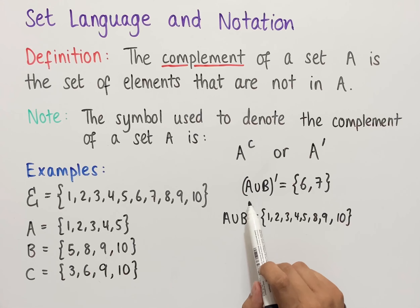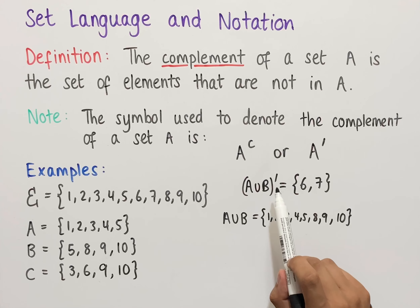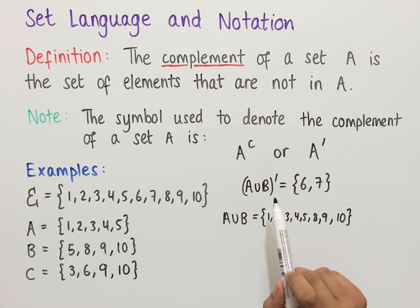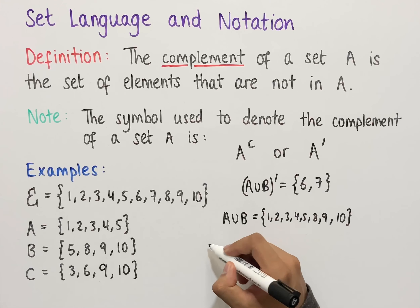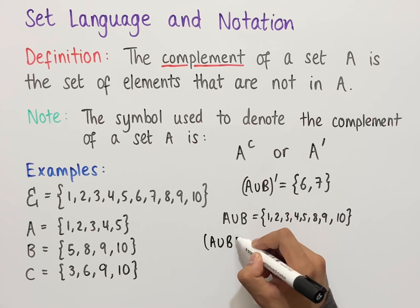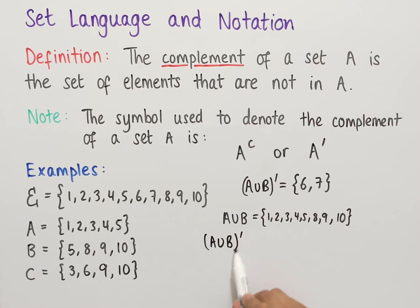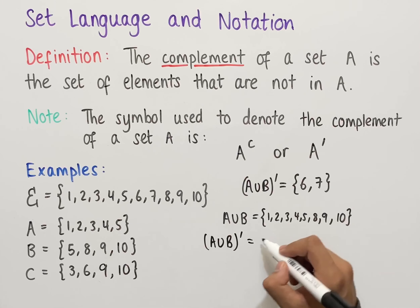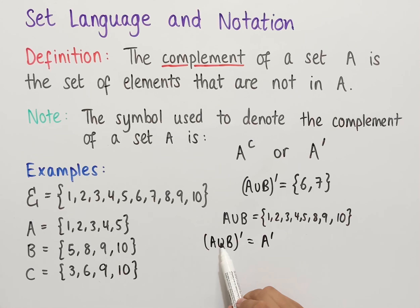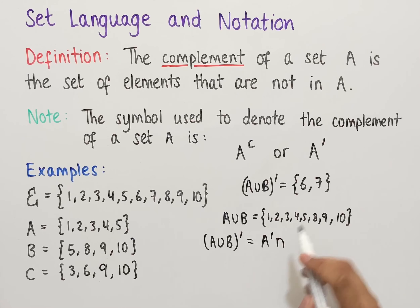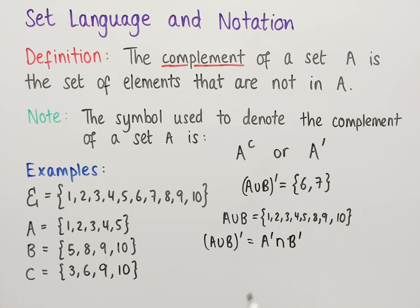Something to note is that when you have a set in brackets with a complement outside, you can apply the complement to each of the symbols inside the brackets and get exactly the same set. So if we have A union B all complemented, applying the complement to each symbol inside gives us A complement, the union switches to intersection, and B becomes B complement. So A complement intersect B complement is exactly the same as A union B all complemented.